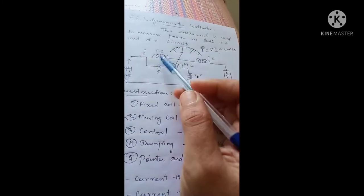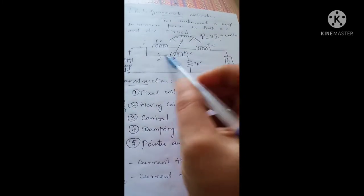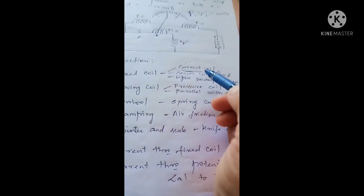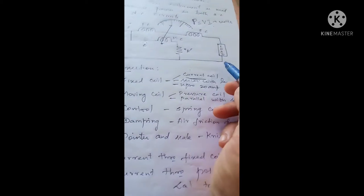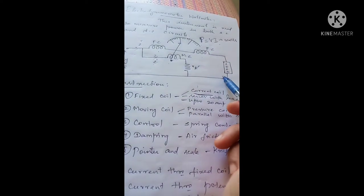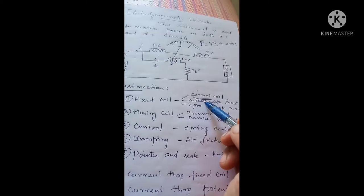The fixed coil is connected in series with the load, so it carries the load current — that's why it's also called the current coil. The moving coil is otherwise called the pressure coil, and it is connected in parallel with the supply voltage.